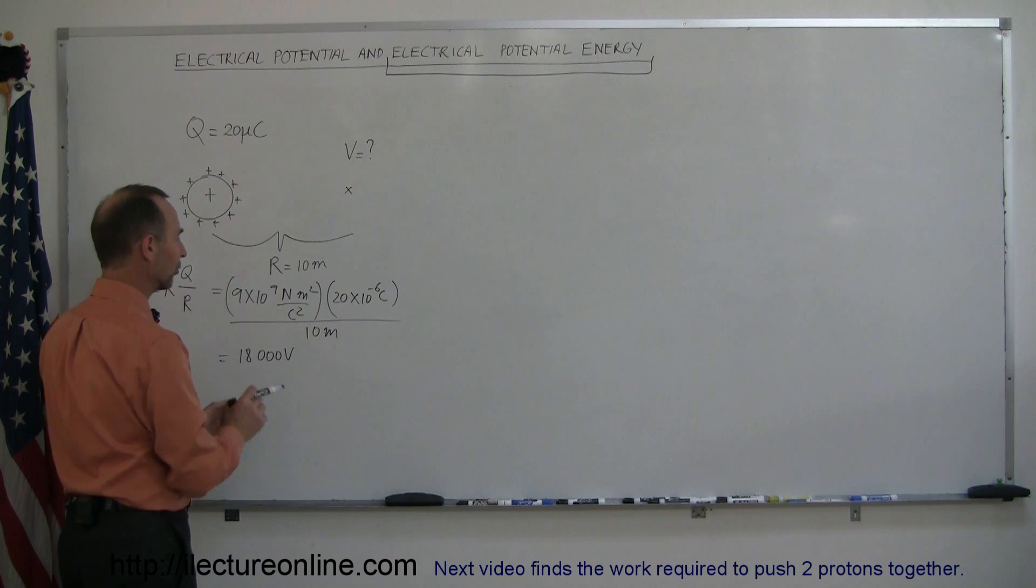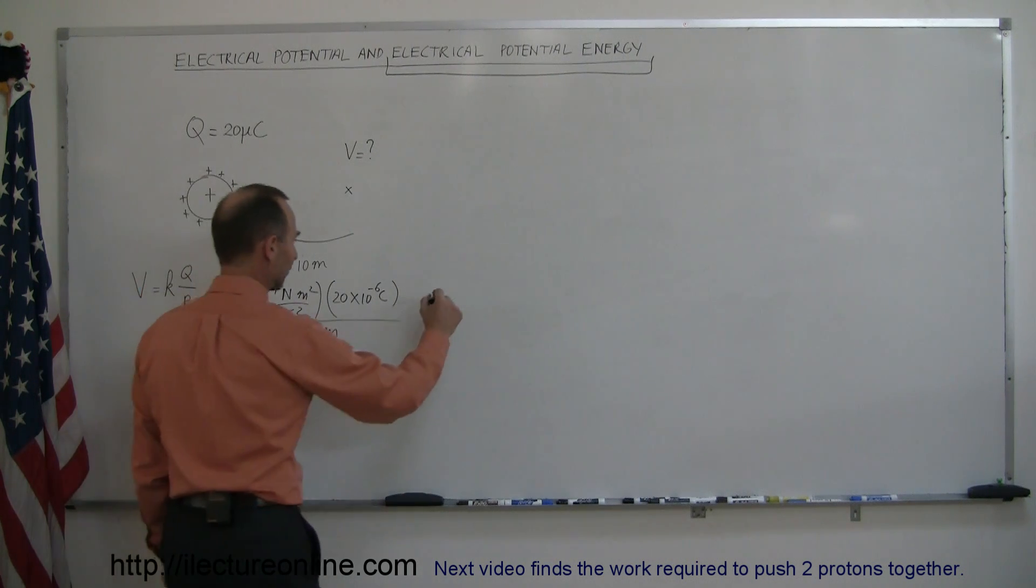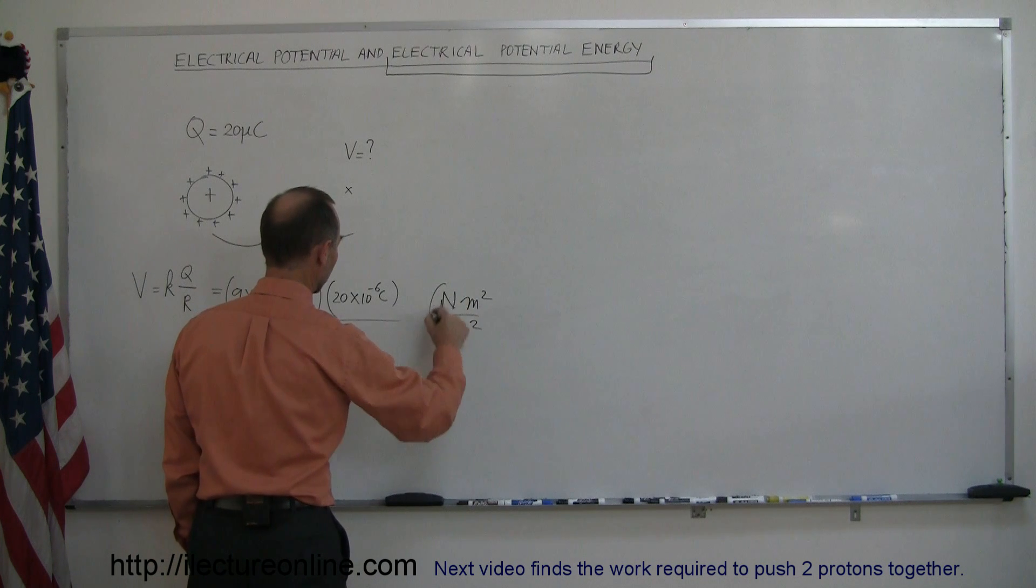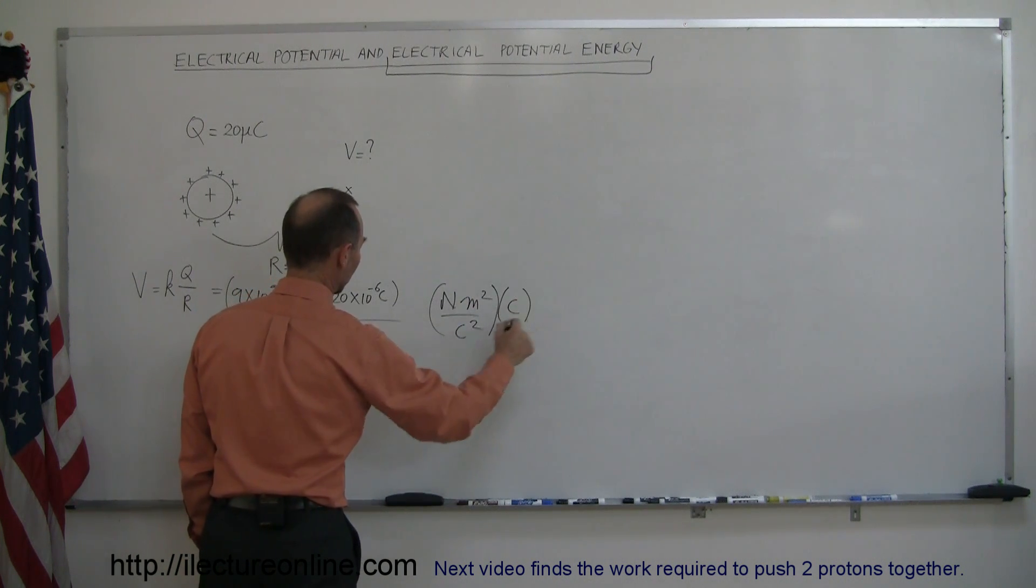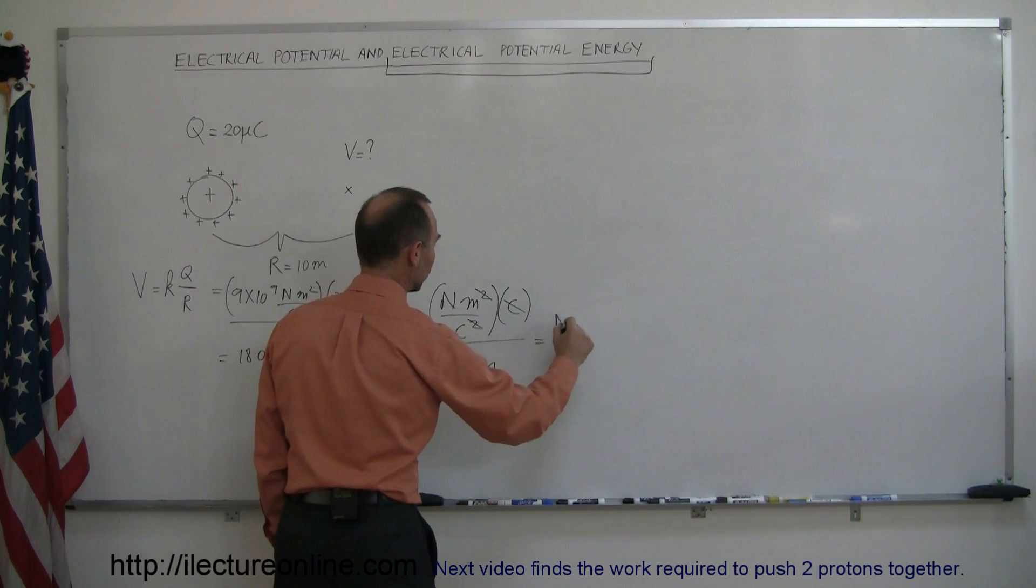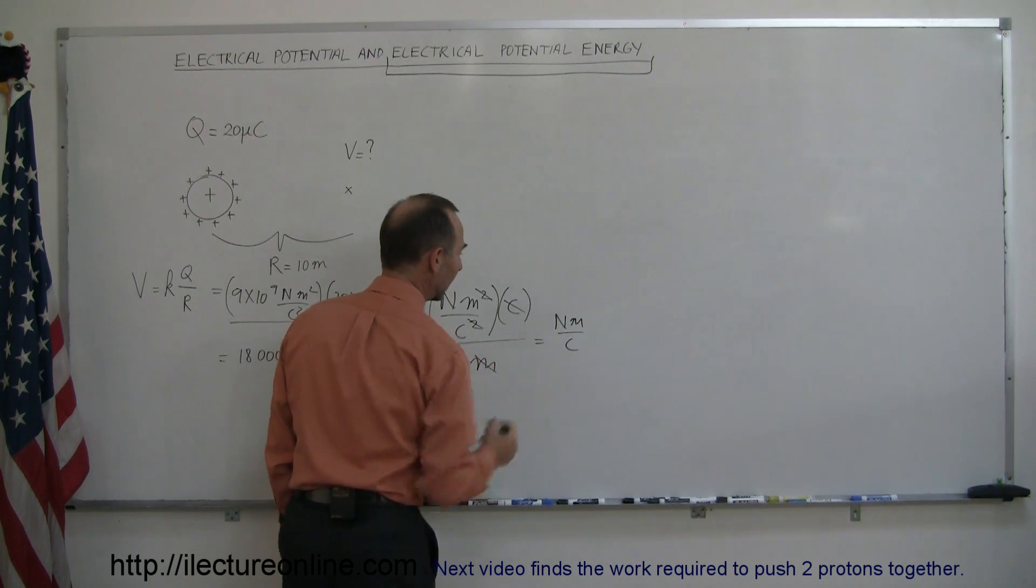How do we get volts? Well let's take a look at those units. We have newtons meters squared per coulomb squared, then we had coulombs, and then we have divided by meters, so this cancels out that, and this cancels out that, so we end up with newton meters per coulomb.